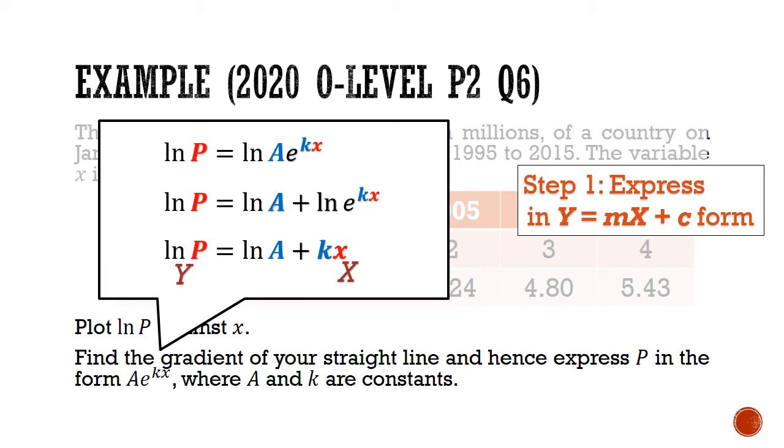This tells us that big Y is equal to ln P, and big X is equal to x, which is exactly what we are told to draw. And our gradient is going to be k, and our big y-intercept is going to be ln A.